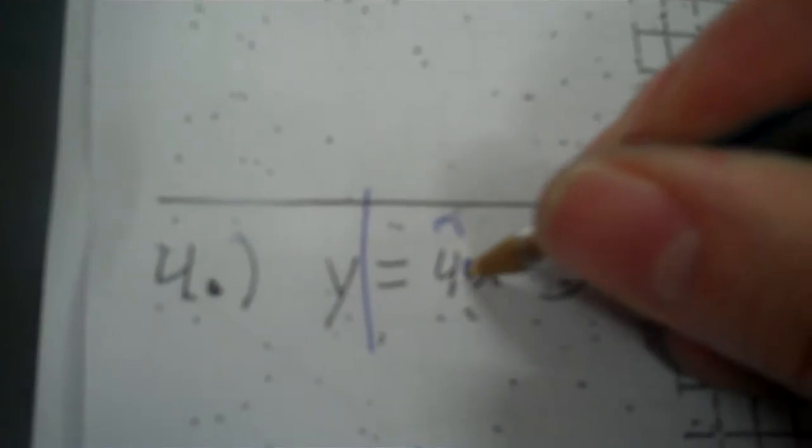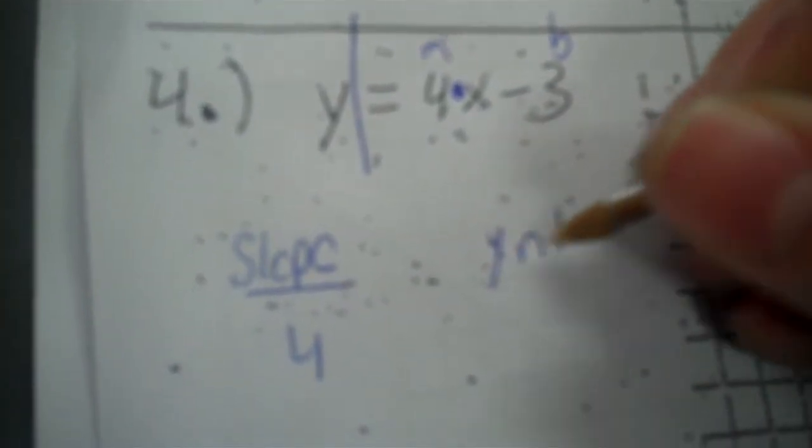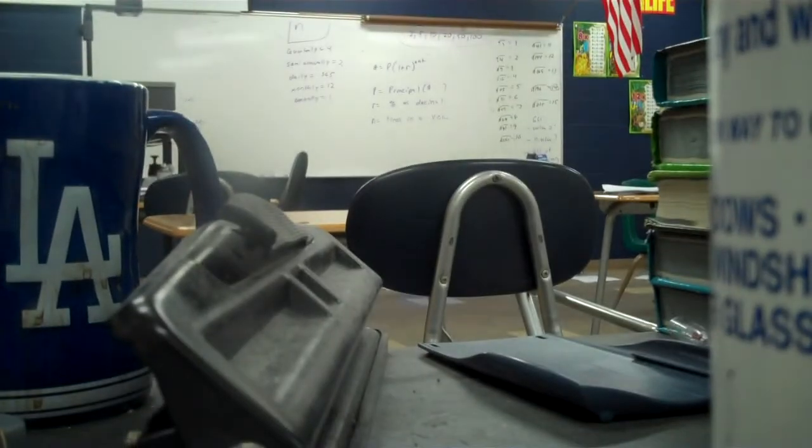Next problem, y equals 4x minus 3. So you have m and b. So the slope is 4 and the y-intercept is negative 3 because it's got a minus in front of it. But you need a number underneath on your slope. You make a 1 if you don't have it. So on the y, you go to negative 3. Then you go up 4 over 1. 1, 2, 3, 4, 1. Don't just do 2 of them. Arrows on both ends.